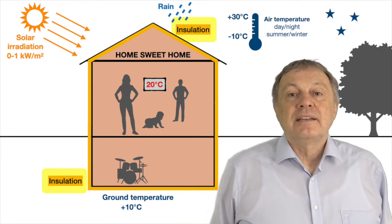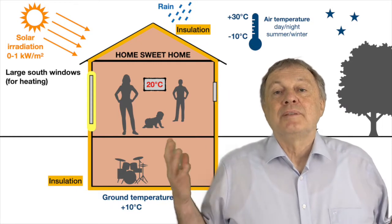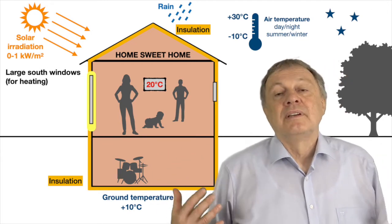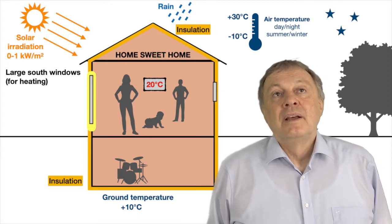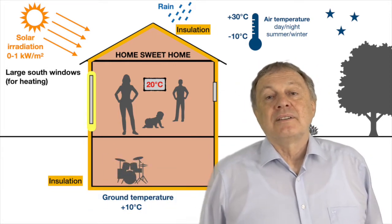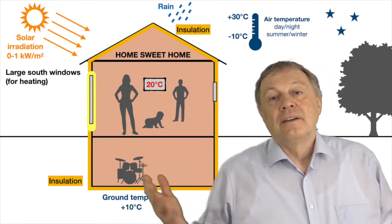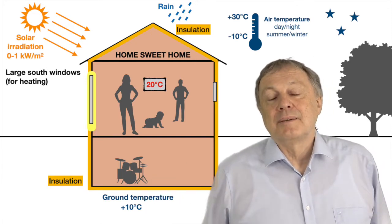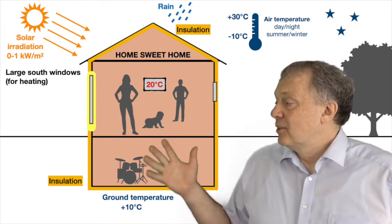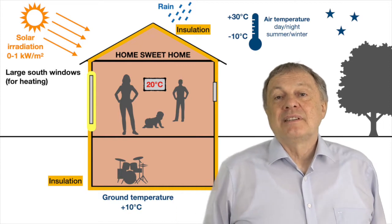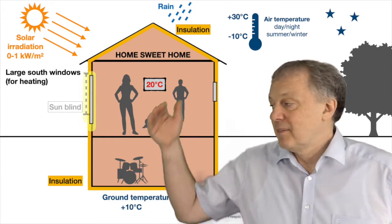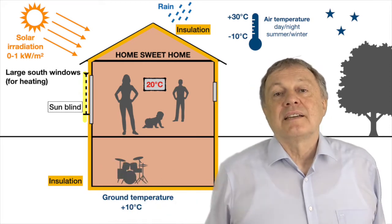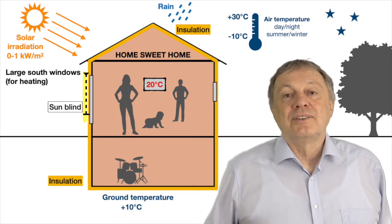You need big windows on the southern side where the Sun comes in, and small windows on the other sides where there is no sun to heat the house. Of course, if you live in the southern hemisphere it's the opposite — big windows face north. The problem with big south-facing windows is that in summer it becomes very hot inside. So you need sun blinds or other sun protection to block the sunlight in summer and keep your window in shade.